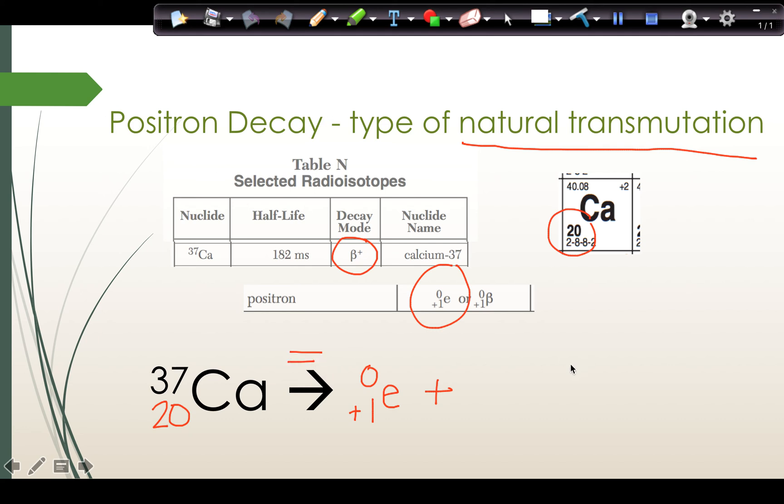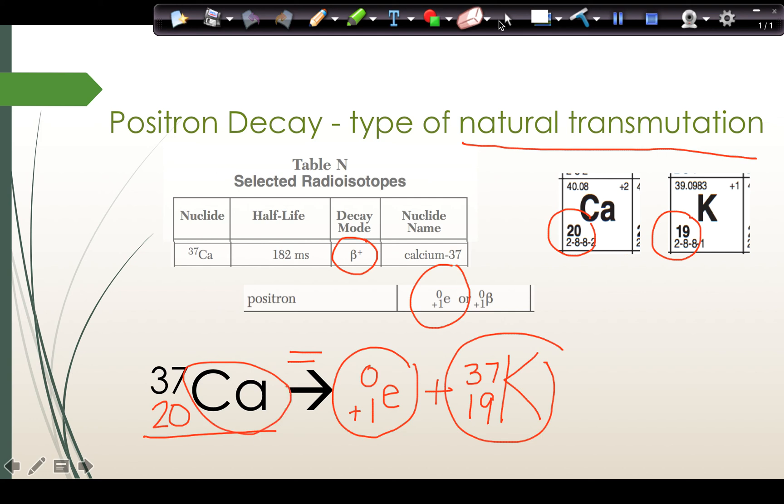I use the arrow like an equal sign to fill in the other product. 37 equals 0 plus 37. 20 equals 1 plus 19. I look up element number 19 on the periodic table and fill in the symbol. So calcium 37 transmutates into potassium 37 by emitting or spitting out a positron. It's natural because calcium 37 is the only reactant before the arrow and it's transmutation because I have different symbols on each side.